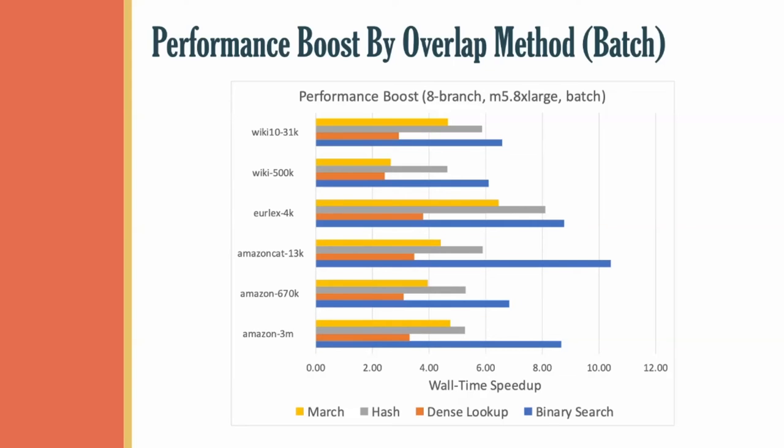These benchmarks were run on publicly available data sets with pre-trained models that we have also made publicly available. Moreover, our benchmarking tools are completely open source to aid in reproducibility. As we can see, the performance boost we've managed to achieve in a batch setting ranges from 2x on the lower end to around 10x on the higher end. The benchmarks shown here are specifically for a set of models trained with branching factor of 8, and run on an M5 8x large AWS instance.